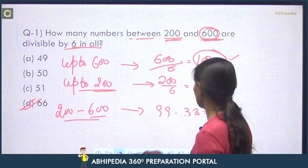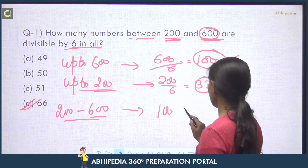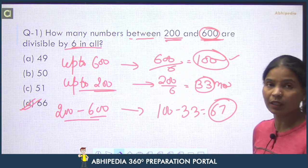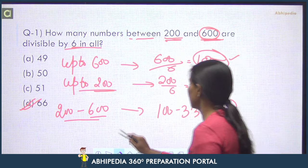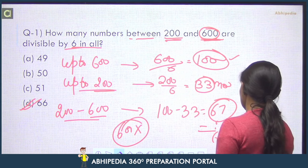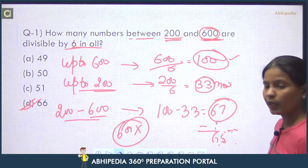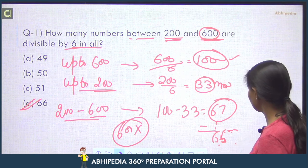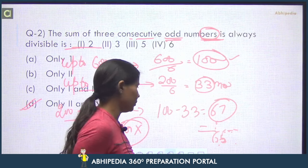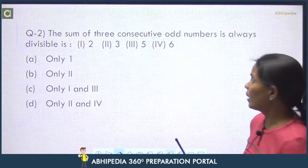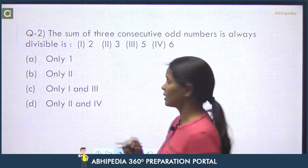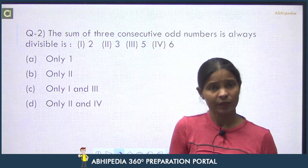So 99 minus 33 equals 66 numbers. Answer is 66. Students might get confused if option 67 was given, but since 600 is not to be considered, you minus 1 and get 66. Next question.